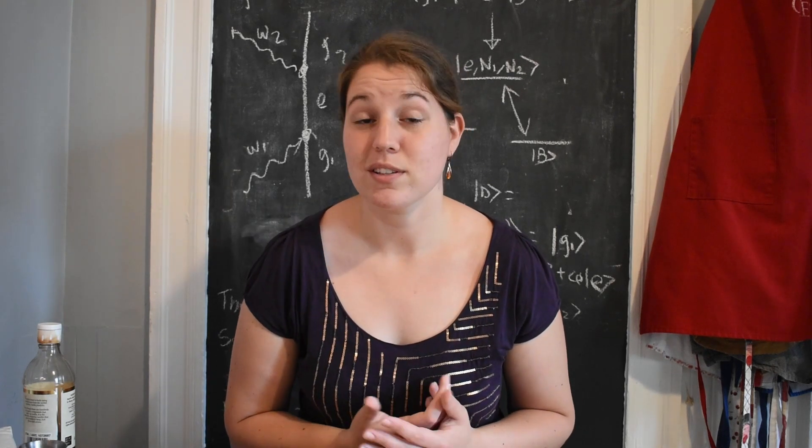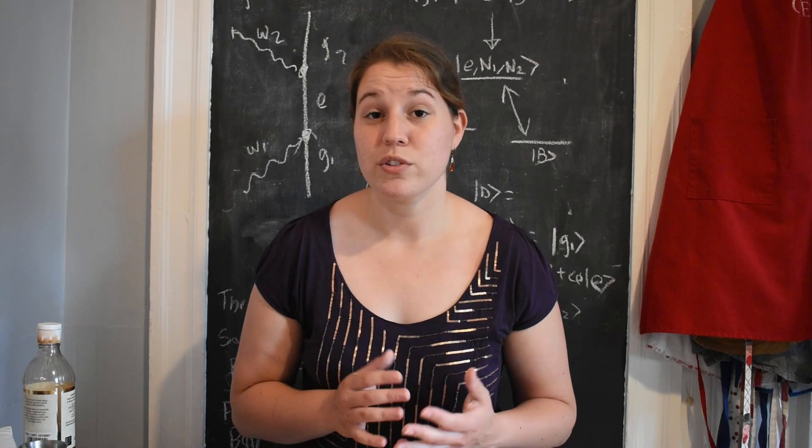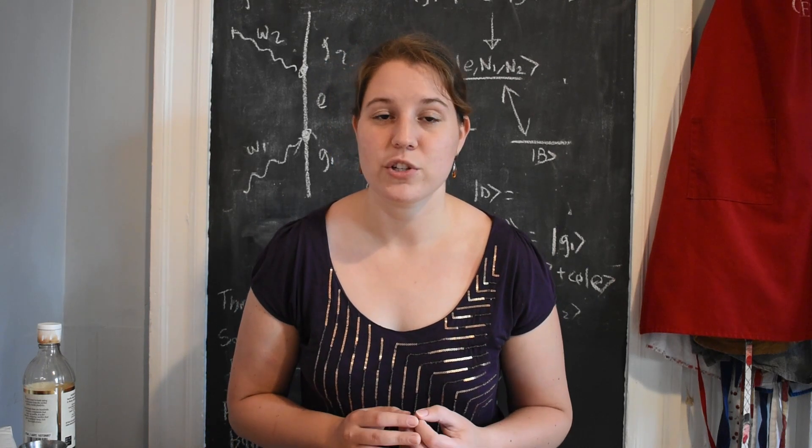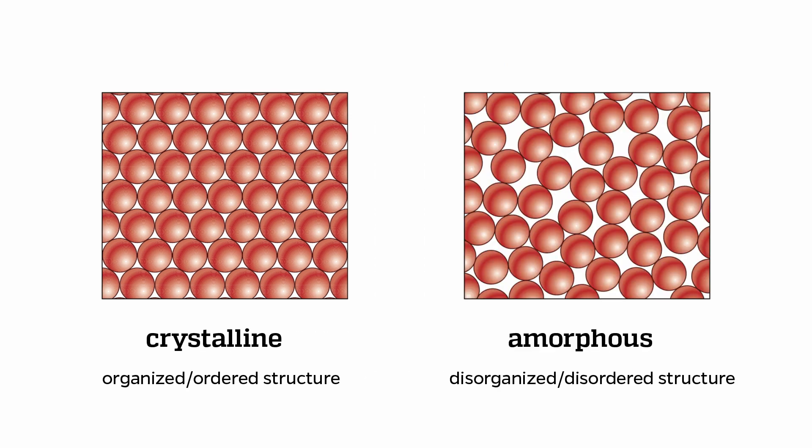If you've watched some of our other videos on solidification or you're thinking about sugar in your own kitchen, sugar is most often seen in the kitchen as a crystalline solid or something that has an organized crystal structure. In contrast, amorphous solids are solids where the parts aren't put together in any particular order. The solid is just kind of packed together in a random way.